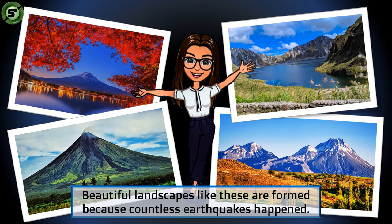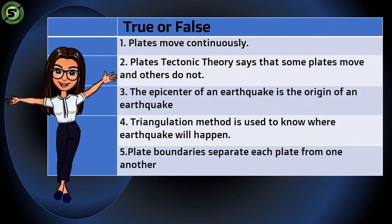Before we end our online class for today, let's have five simple questions. This is a true or false activity. Number one: Plates move continuously. Number two: Plate tectonic theory says that some plates move and others do not. Number three: The epicenter of an earthquake is the origin of an earthquake. Number four: Triangulation method is used to know where an earthquake will happen. Number five: Plate boundaries separate each plate from one another. I will reveal all the answers after the fifth item — take your time.